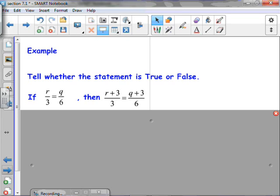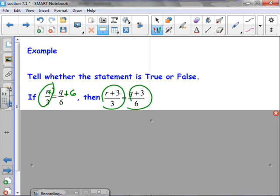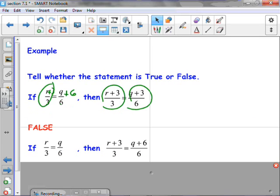Let's tell whether this statement is true or false. If R over 3 equals Q over 6, then this whole thing. Well, we know that we can just add our denominator to our numerator. There. R plus 3 over 3 should equal Q plus 6 over 6. Well, this part is exactly what they've written here. But Q plus 6 over 6, it's not what they wrote there. They wrote Q plus 3. So this is not going to be true. False. Because it should be Q plus 6 over 6.